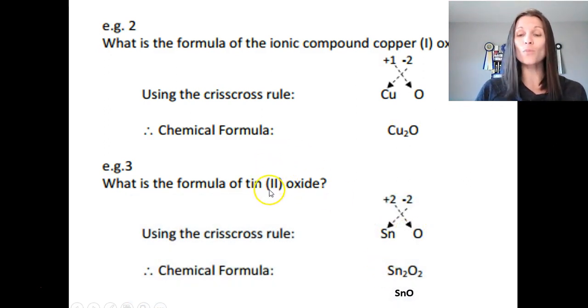Tin, in this case, was tin plus two. So, you wrote tin plus two. Oxygen negative two. You bring the twos down, would be SN2O2. Notice you do have to reduce them to SNO.